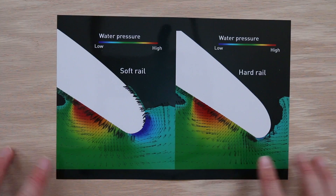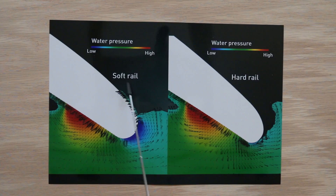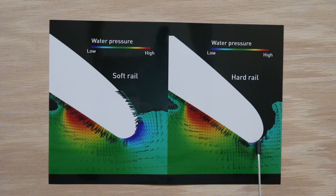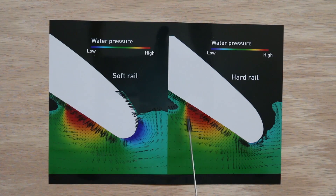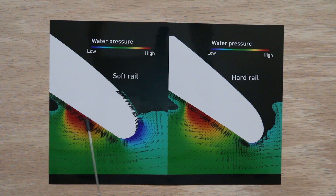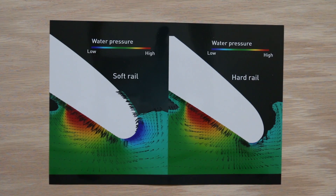One of the easiest things for me to grasp — given that I came into this with no knowledge of CFD at all — was the work you did with rails. Can you walk us through what you're seeing when you look at a softer rail versus a harder rail, with a harder edge down here on the bottom versus a more rounded edge? It's also interesting to see that this board has a deeper concave coming to a harder edge, and this one has less of a concave coming to a softer bottom edge. What are you seeing in the pressure distributions represented by these colors?